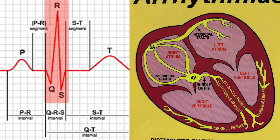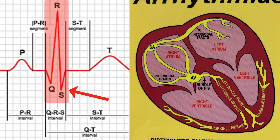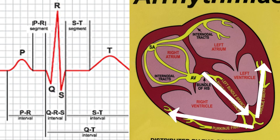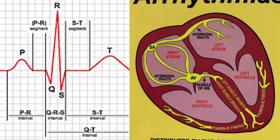The QRS complex is the main large complex, whether or not it has a Q, an R, and an S — it doesn't always have all those components. The Q-wave is the first negative (downward) deflection. The R-wave is the first upward deflection, usually the largest seen in leads 1 and 2. The S-wave is the downward deflection after the R-wave. A key thing we look for is width: greater than 0.12 seconds (three small boxes) indicates slow conduction, suggesting a conduction defect or a rhythm originating below the AV node.